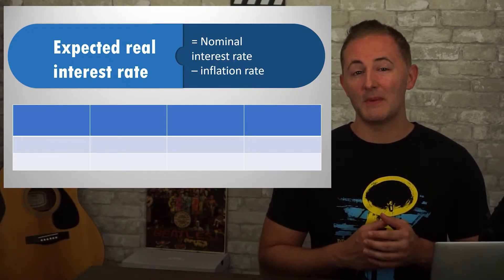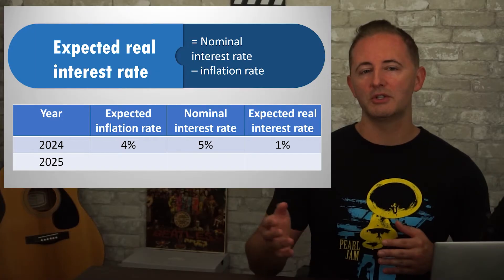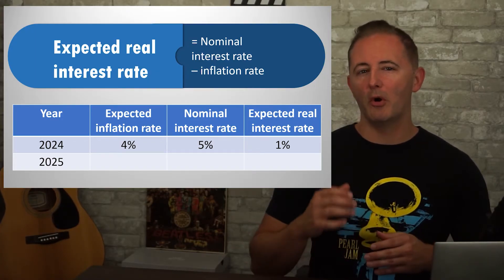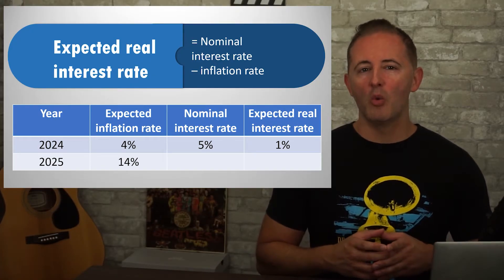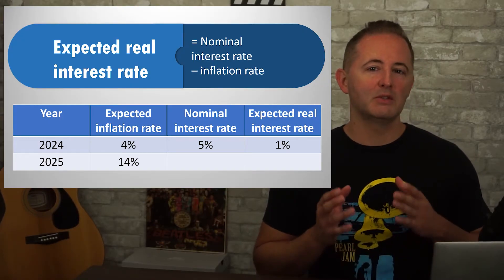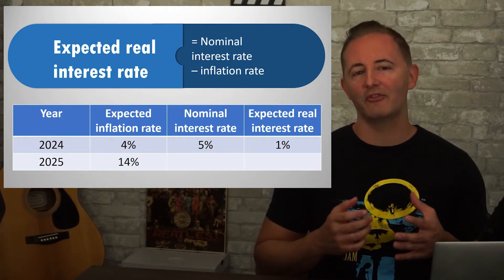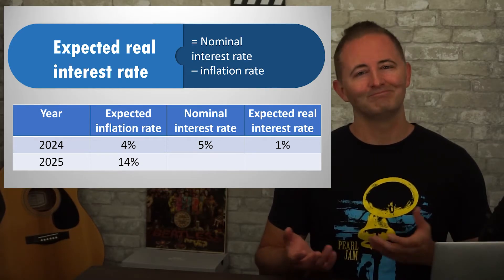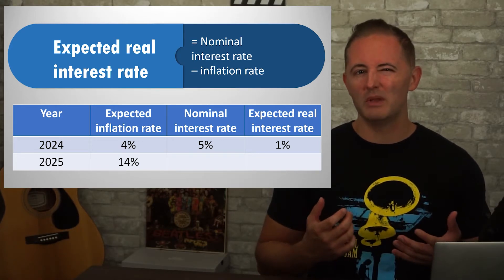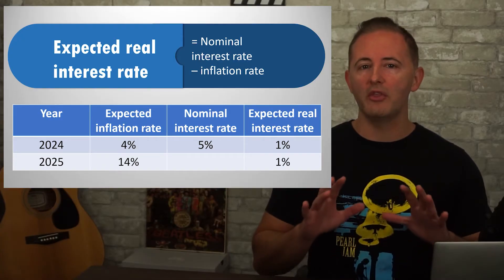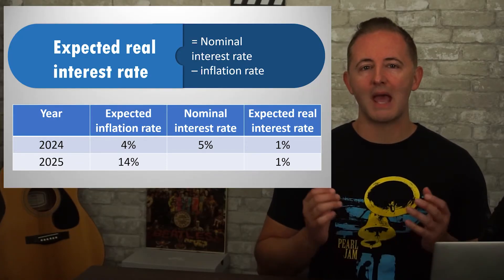In this example, if the expected inflation rate is 4% and the nominal interest rate is 5%, it gives us an expected real interest rate of 1%. Now, suppose that both borrowers and lenders expect inflation to be 14% instead of 4% — what would happen to the expected real interest rate? Well, the main thing is what happens to the nominal interest rate. If it stayed at 5%, the expected real interest rate would plunge to negative 9%. But is this realistic? Not really. Borrowers would obviously love to borrow money at a negative real interest rate, but lenders wouldn't be down for that.